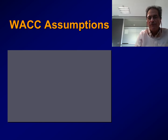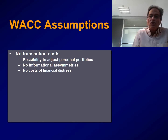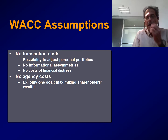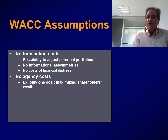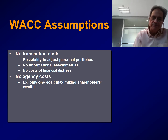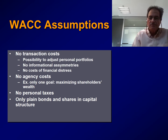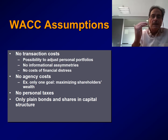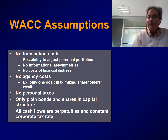The main assumptions of the WACC formula are the following. First, there are no transaction costs, no informational asymmetries, no cost of financial distress, etc. Second, there are no agency costs — meaning there is only one goal, which is maximizing shareholders' wealth, so there is no conflict of interest between management and equity holders. Third, we have no personal taxes; we only account for corporate taxes through the corporate tax rate TC. Fourth, the capital structure is only composed of plain bonds and shares, meaning no complex financial instruments. Finally, all cash flows are perpetuities, and there is a constant and unique corporate tax rate.